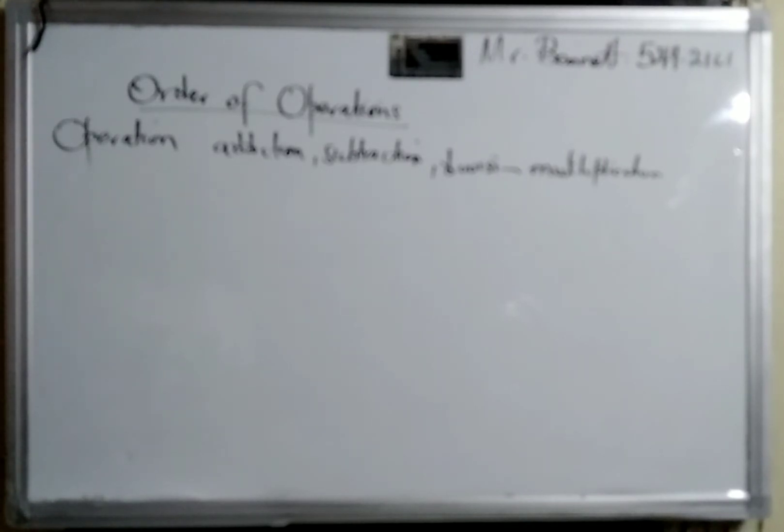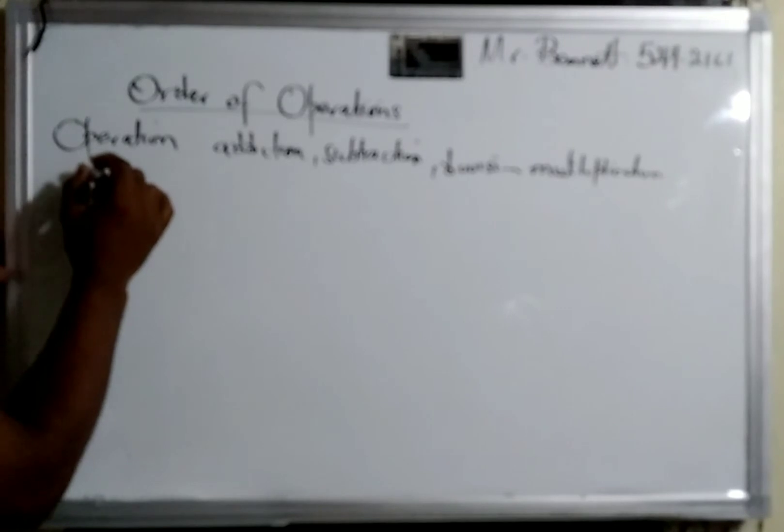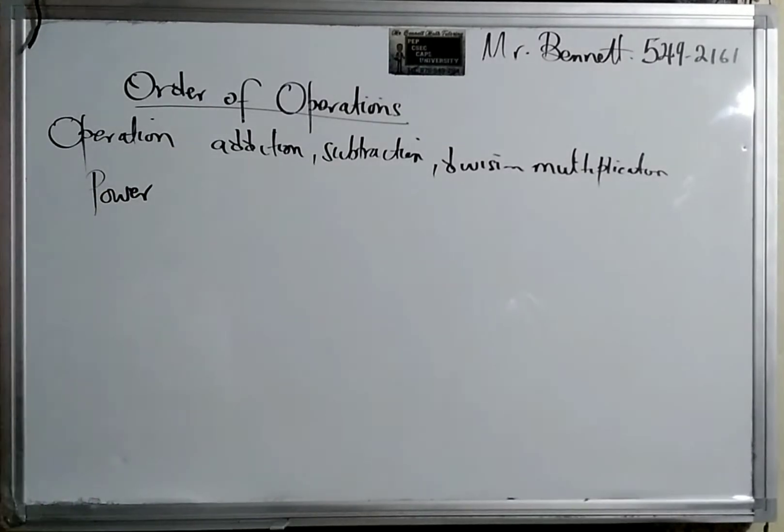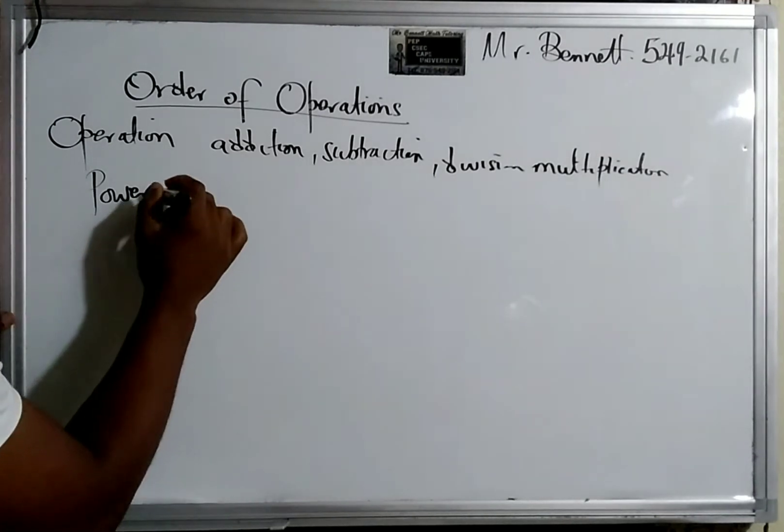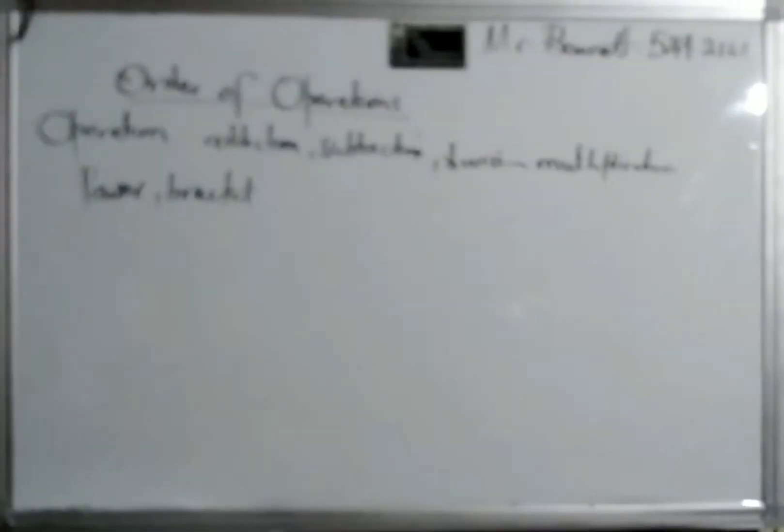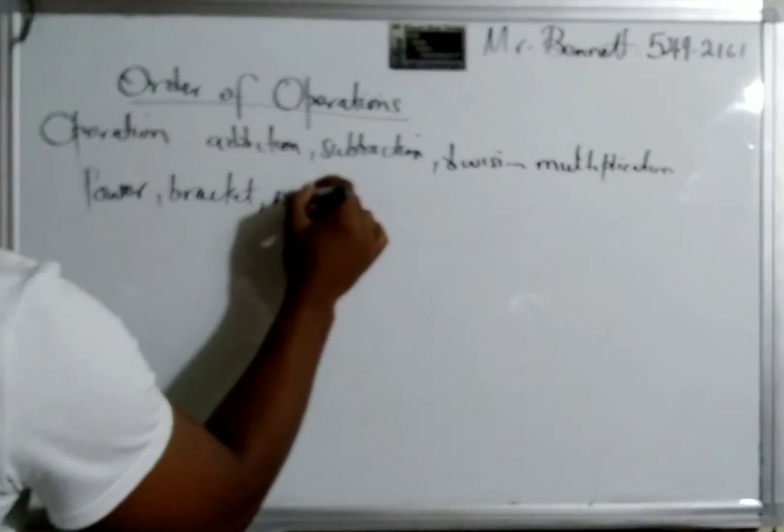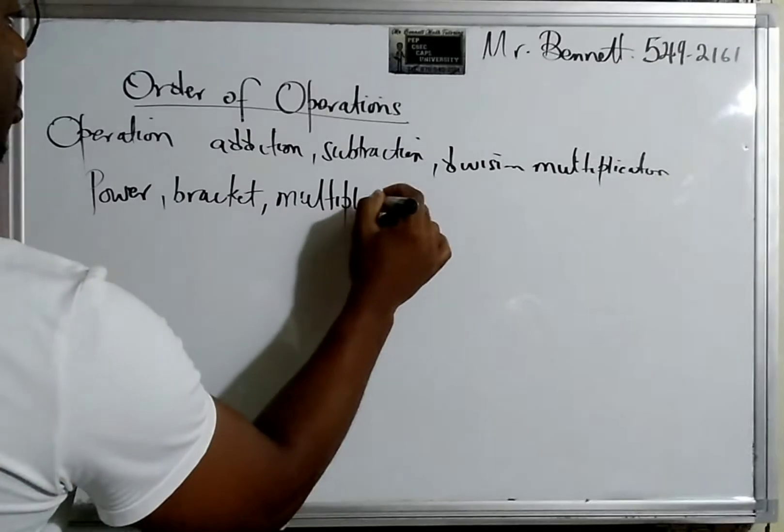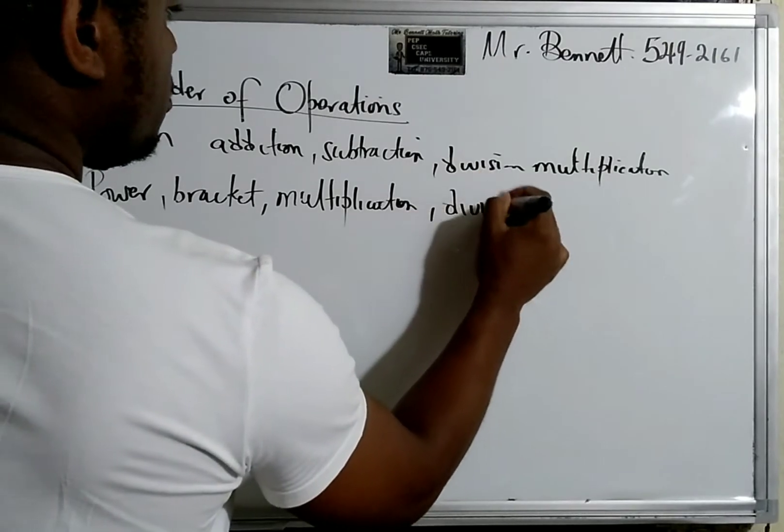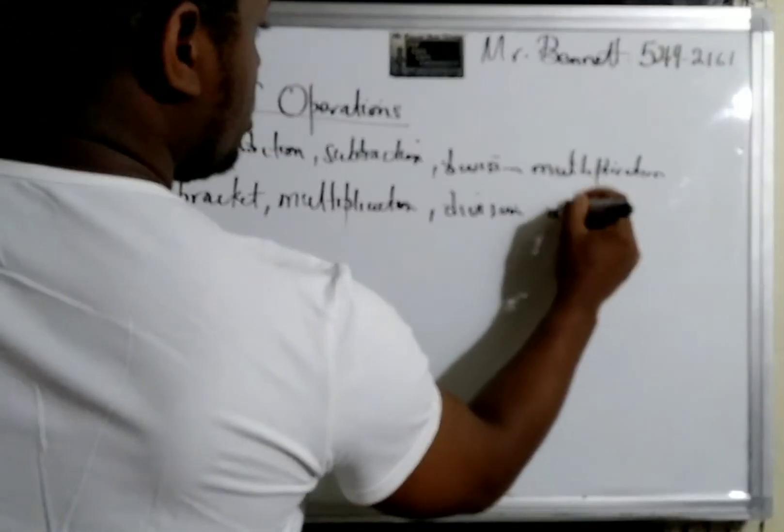...it when we have multiple operations. So the rule states that we must do the power first. So if a number is raised to an index, we do the power part first. Next, if there's a bracket, we do the bracket next. If there's no bracket, we go to multiplication, then division, then addition and subtraction last.